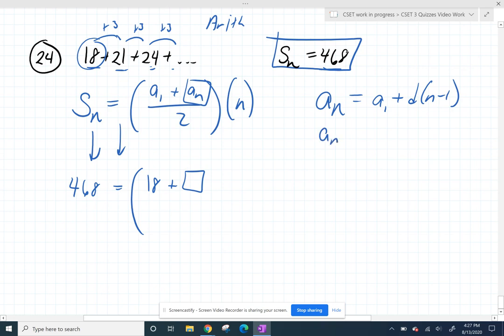And so we can get any term we want, because we were looking for a sub n, by taking the first term, which is 18, and adding my common difference, which is 3, n minus 1 times. So n, we're still looking for what n is. That's what they want, how many terms there are.